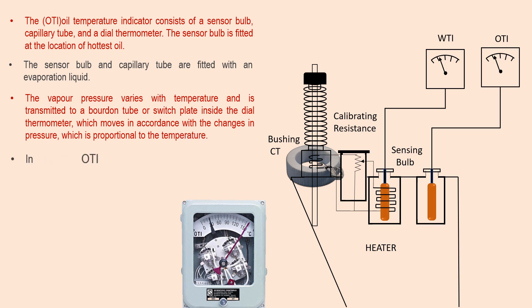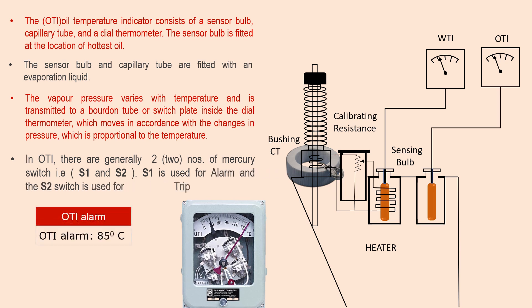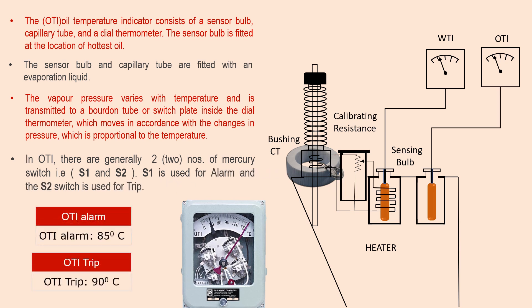In the OTI, there are generally two numbers of marker switches, S1 and S2. S1 is used for alarm and S2 is used for trip.